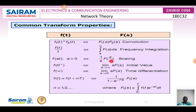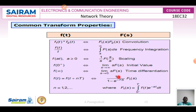Continuing the properties: f(t)/t corresponds to the integral from s to infinity of F(s) ds (frequency integration); scaling f(at) with a ≥ 0 gives (1/a)·F(s/a); initial value f(0+) = limit s→infinity of s·F(s); final value f(∞) = limit s→0 of s·F(s). For a periodic function where f(t) = f(t + nT), the Laplace transform is (1/(1 - e^(-Ts)))·F1(s), where F1(s) = integral from 0- to T of f(t)·e^(-st) dt. This derivation will be covered in the next video.